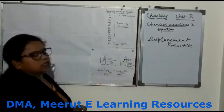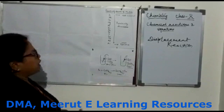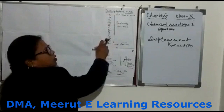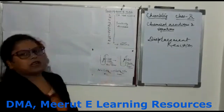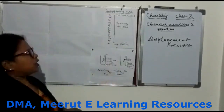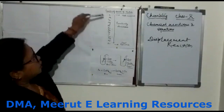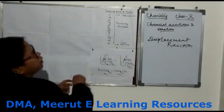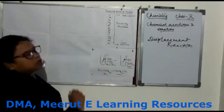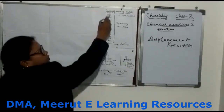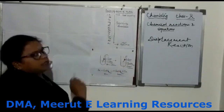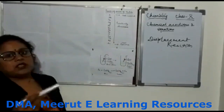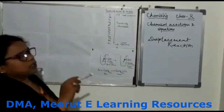Now why is this colour change taking place? This is because iron is more reactive than copper, as you can see in the reactivity series. In this reactivity series, potassium is kept at the top and gold is at the bottom. Potassium is the most reactive metal and gold is the least reactive metal.